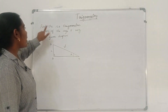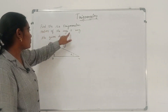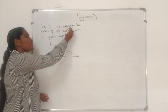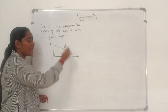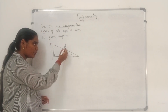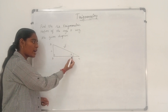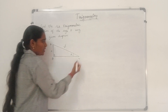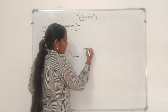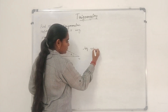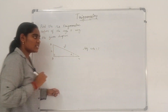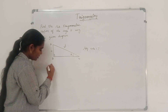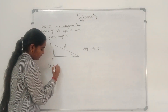In this problem: find the six trigonometric ratios of angle theta using the given diagram. We have to find the six trigonometric ratios. The diagram is given — hypotenuse value is 25, based on theta the opposite side is 7, and we don't know the adjacent side. So first we have to find the value of the adjacent side using the Pythagoras theorem.